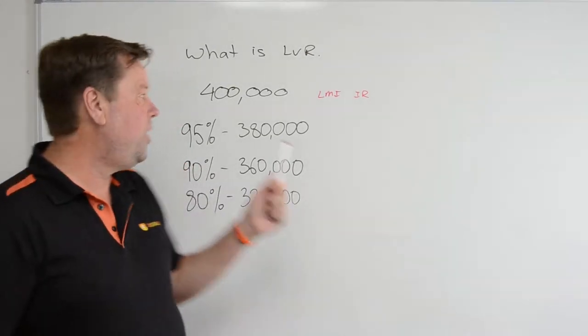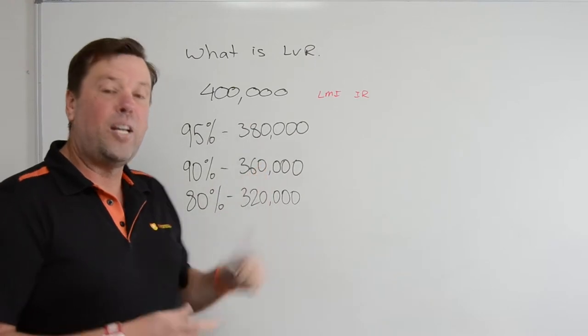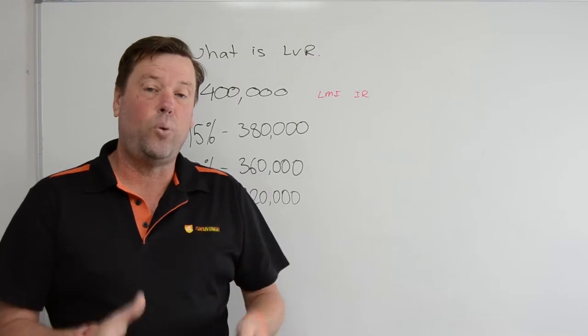What does that mean? If we do a 95% lend, that means we're going to get a loan of $380,000 and we need to contribute 5% ourselves, which is $20,000.